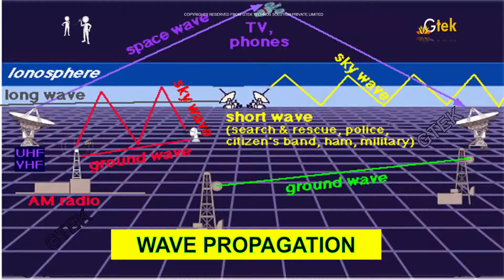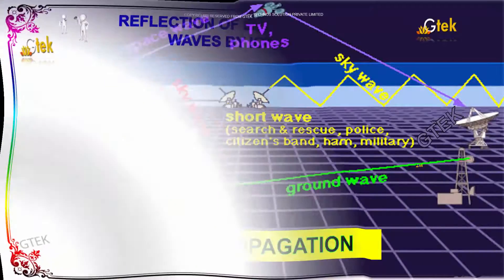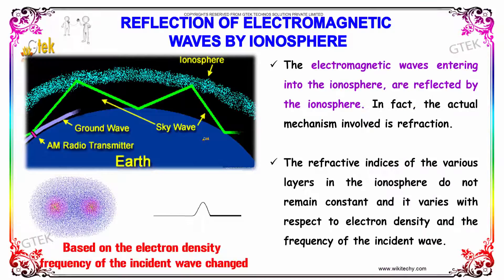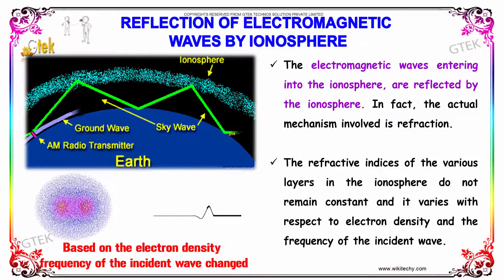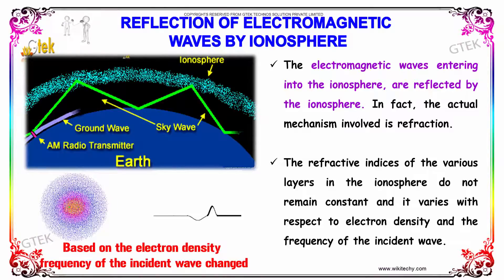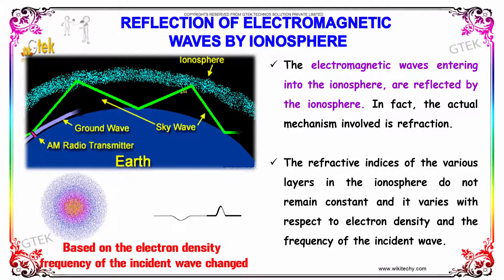This is about wave propagation — how waves are propagated from the transmitter to the receiver end. The electromagnetic waves entering into the ionosphere are reflected by the ionosphere. In fact, the actual mechanism involved is refraction, not simple reflection.